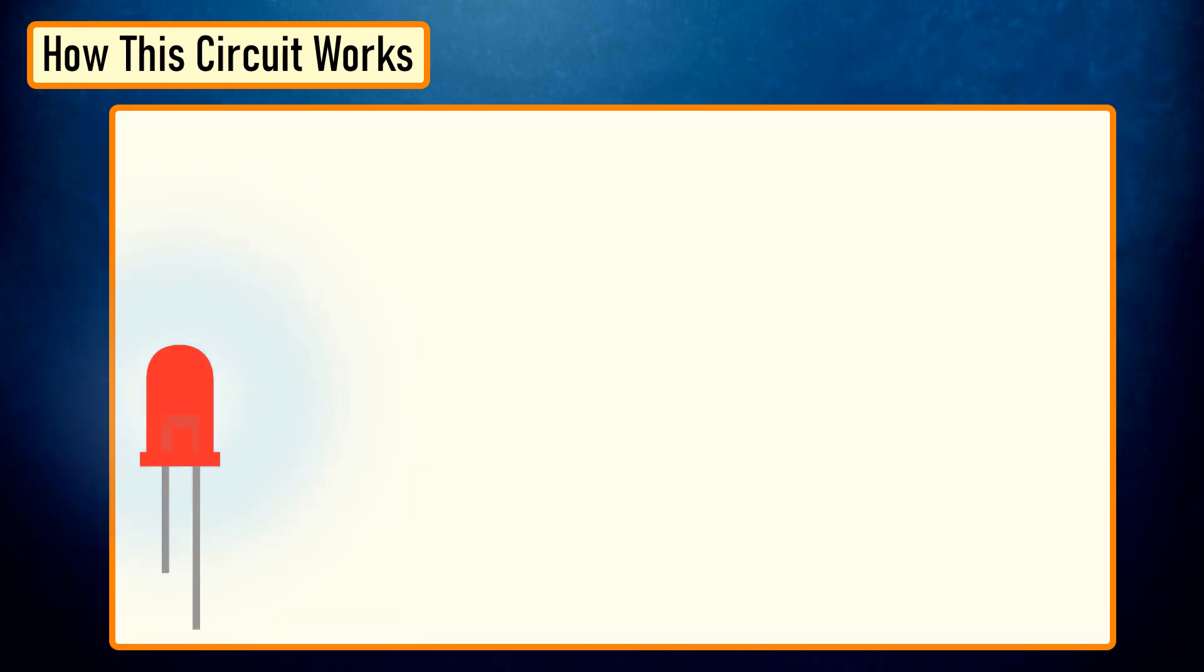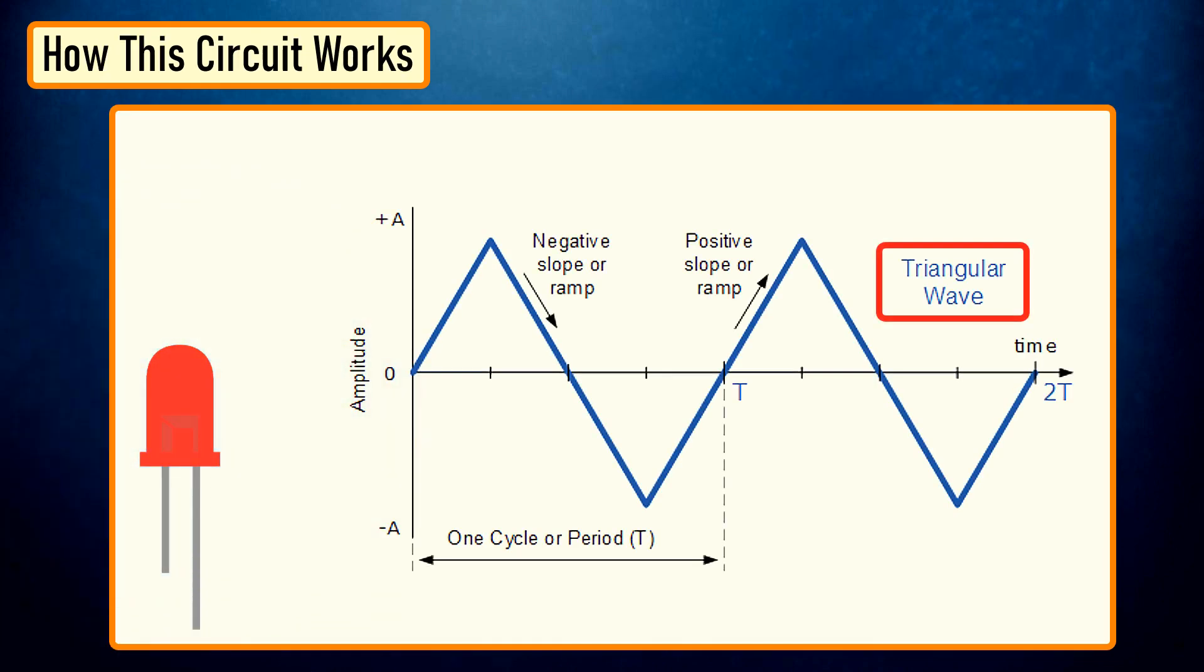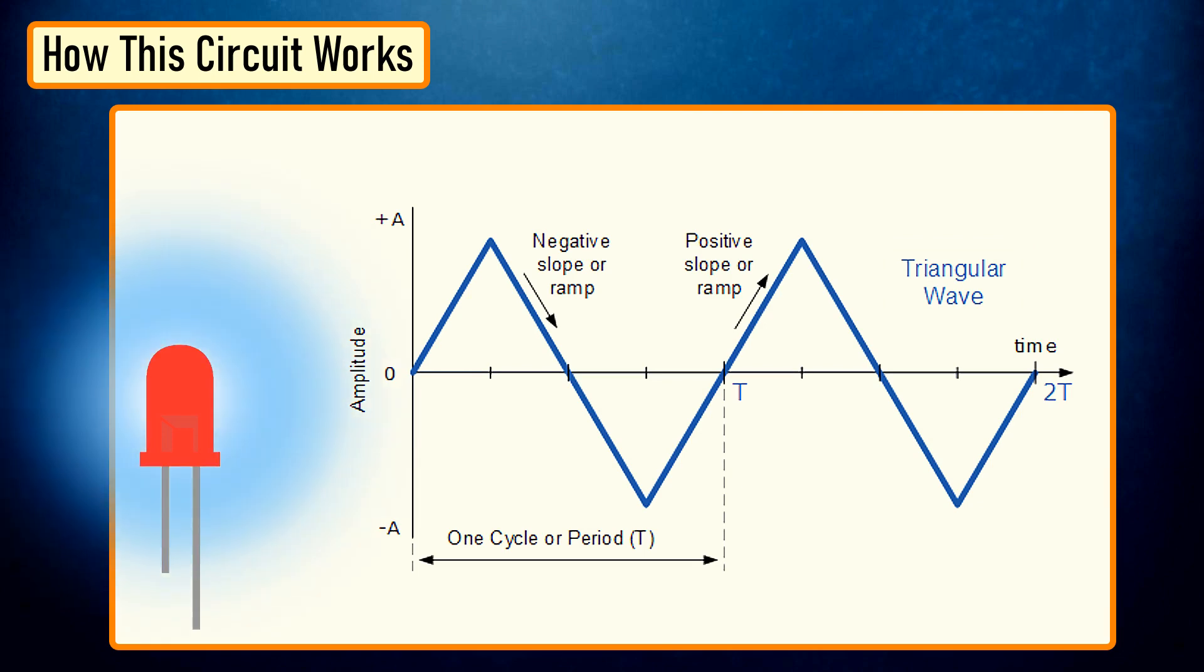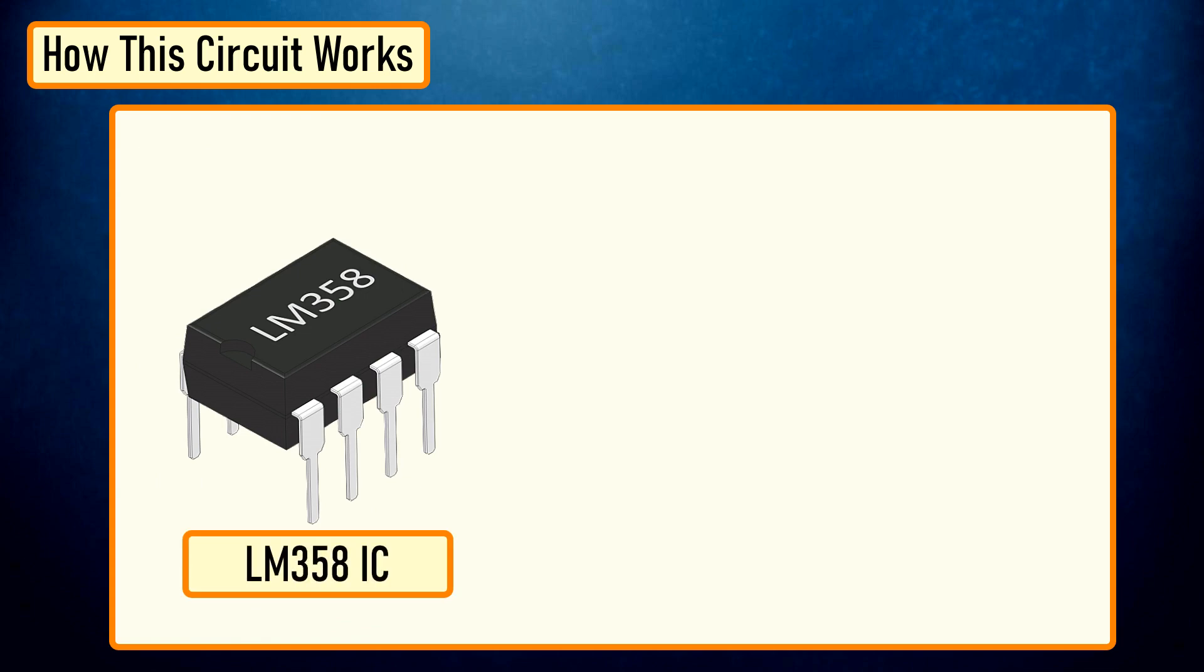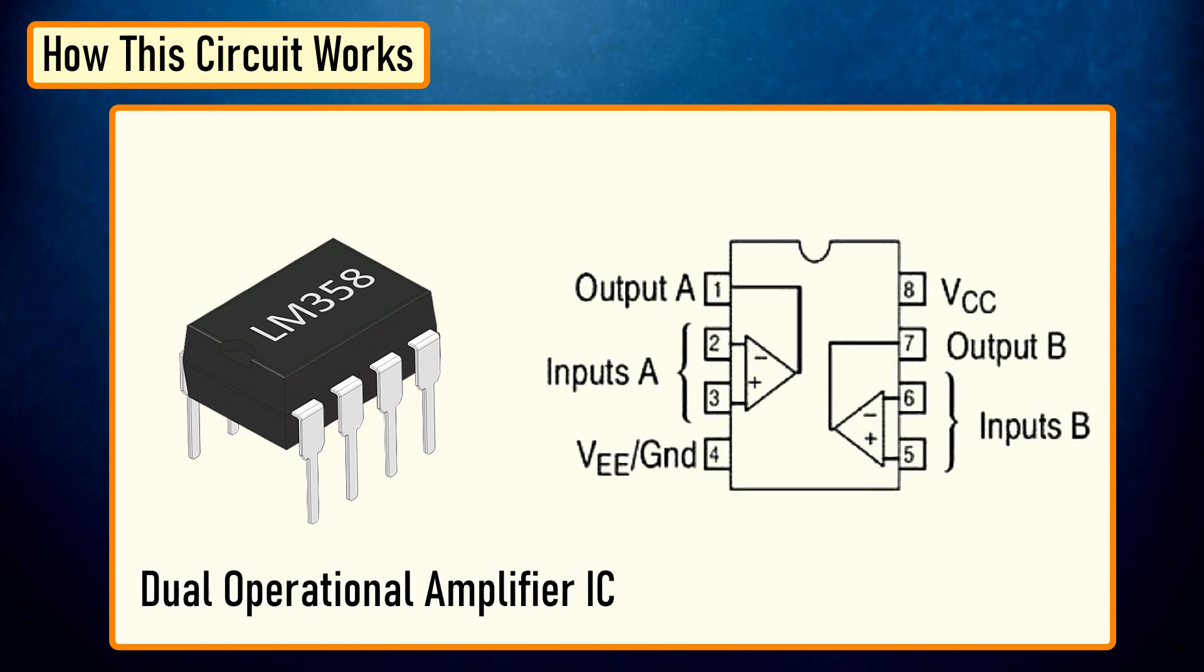To get the fading effect we need to generate a series of triangular waves. Because of the triangular waves the LED starts glowing slowly and then slowly dims off and the cycle continues. This setup is done using the LM358 IC. LM358 is a dual operational amplifier IC integrated with two op-amps powered by a common power supply.